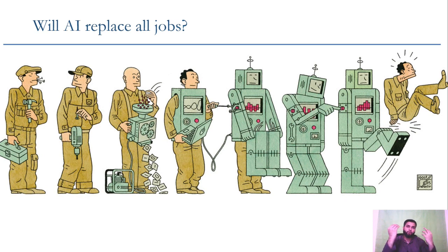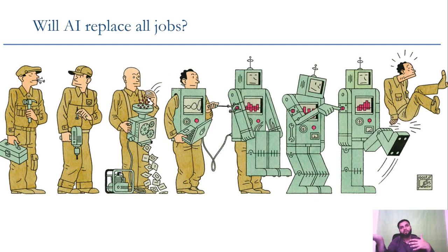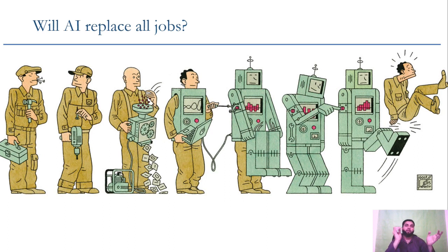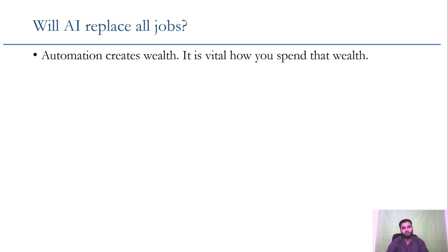If you can produce more at lower cost, you save money. When you save, you demand other products. When demand for other products increases, employment in those sectors increases too. So some jobs are taken by technology, but the efficiency gains save money, and those savings generate demand for other products, creating jobs in other sectors. This time the disruption will be more severe, but we'll discuss what we need to do.